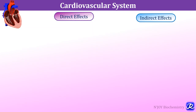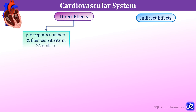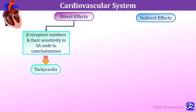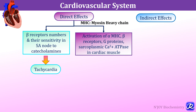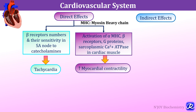Thyroid hormones have direct and indirect effects on the cardiovascular system. Direct effects include increased beta receptor numbers and their sensitivity in the SA node to catecholamines, leading to tachycardia. Thyroid hormones also activate alpha myosin heavy chain, beta receptors, G protein and sarcoplasmic calcium ATPase in cardiac muscle, leading to increased myocardial contractility and increased stroke volume.